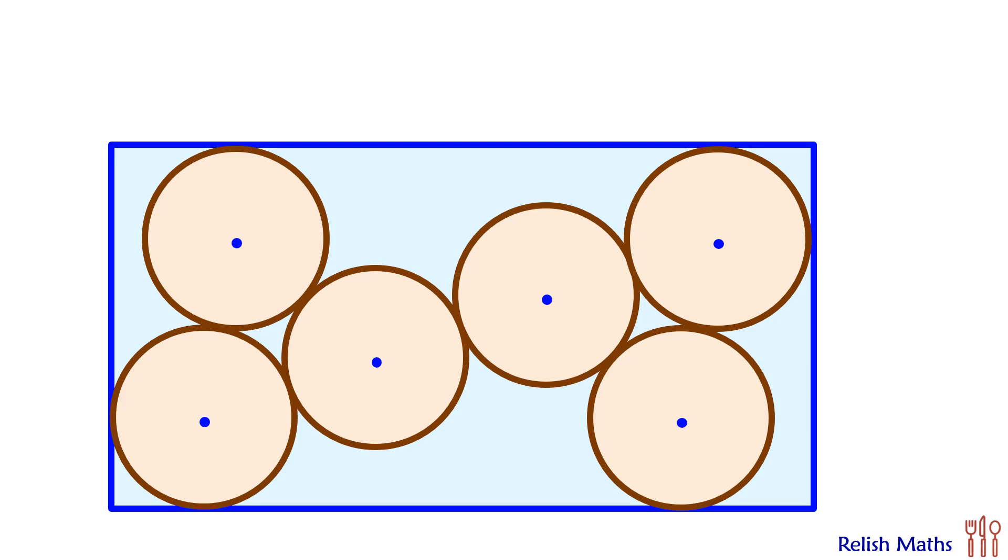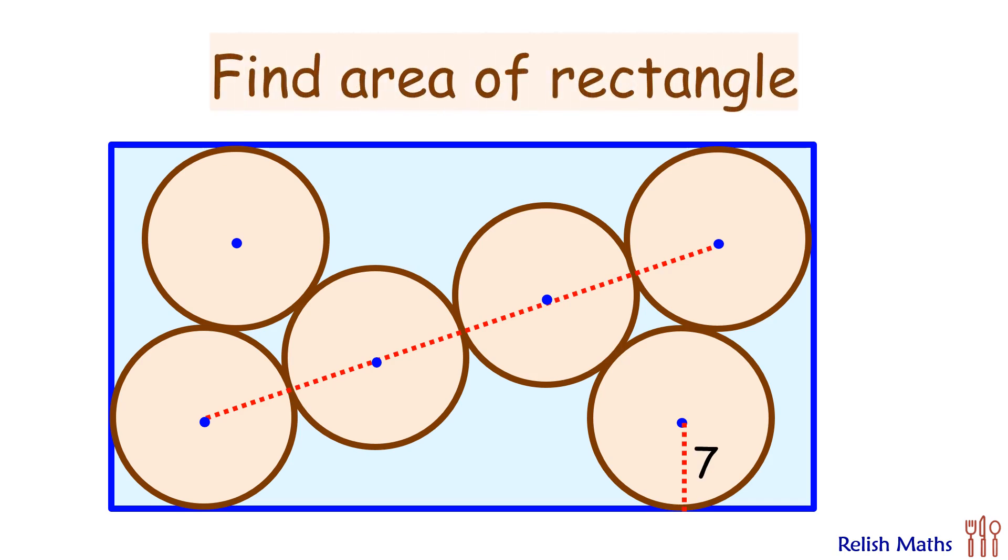Welcome back to this interesting question. Given is a rectangle with six circles in it, such that the radii of four of the circles are in a straight line and the radius of each circle is 7 units. Using this limited data, we have to find the area of the rectangle.